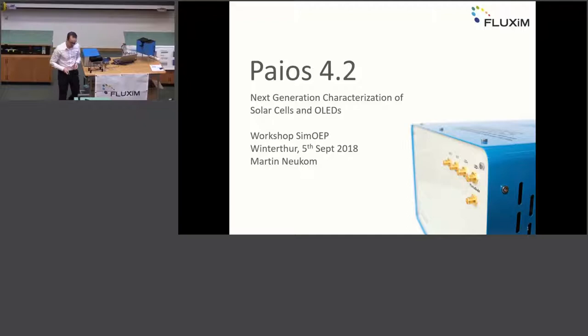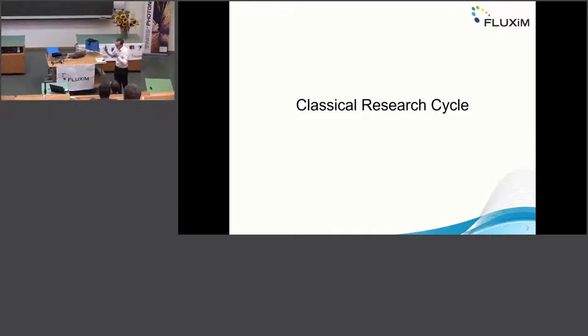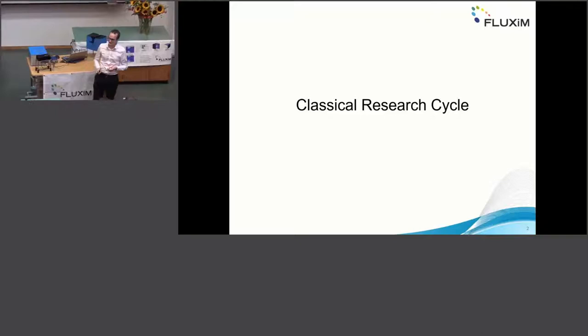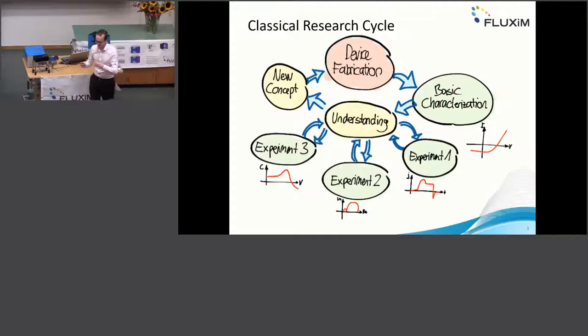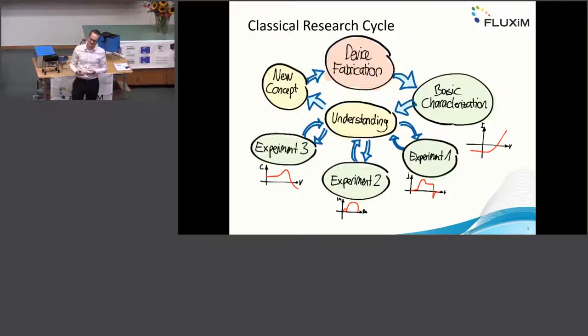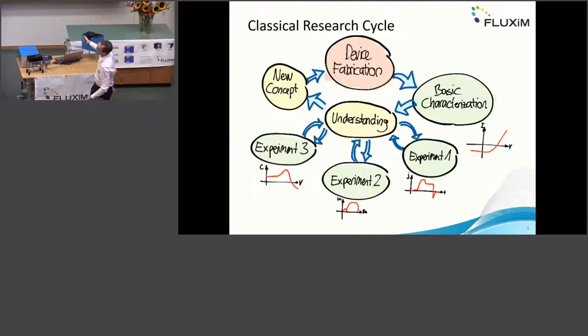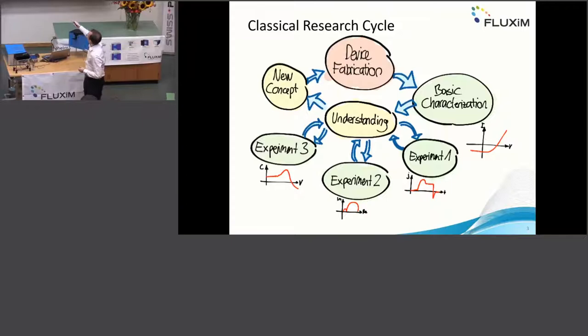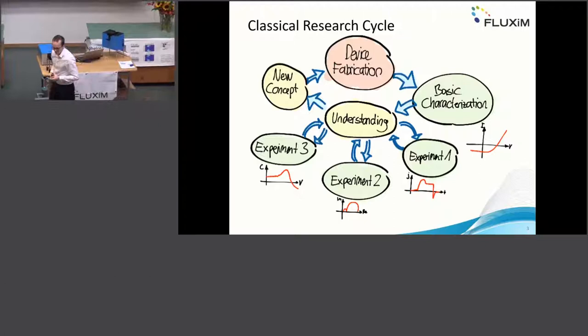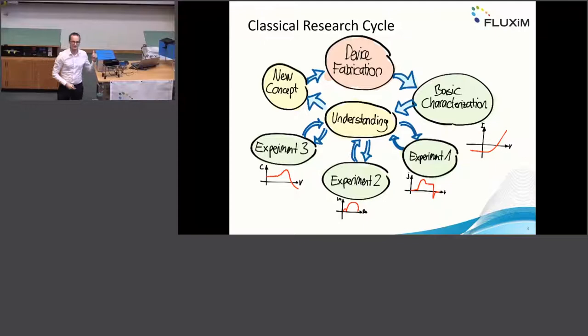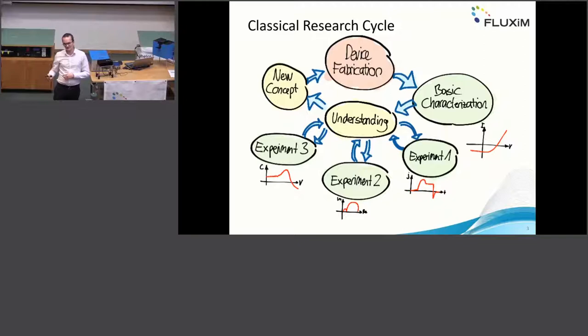Let's first consider how classical research is often done in a very simplified graph. You fabricate your device, then you do some characterization, try to understand your device — mostly, why is my device not working? Then you go to the next experiment, try to understand it, and once you've understood what's wrong, you create a new concept and start all over. The problem when working with perovskite or organics is that maybe the third experiment was two weeks later and your device has already degraded. So it's not the same device anymore.